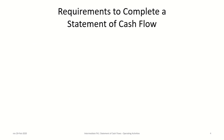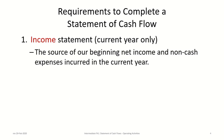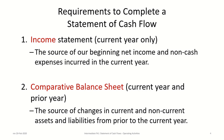To construct a statement of cash flows, you require two source financial statements. The first is a current-year income statement, which provides the beginning net income for the indirect method and identifies non-cash expenses. The second is a comparative balance sheet showing both current and prior year ending balances, which is the source of changes in current and non-current assets and liabilities.